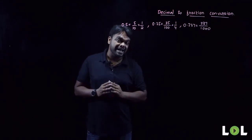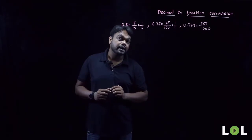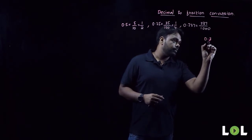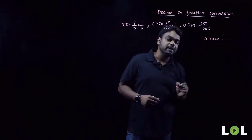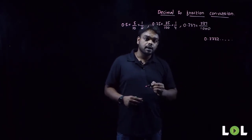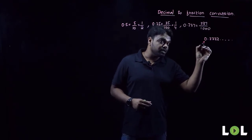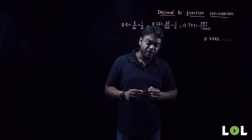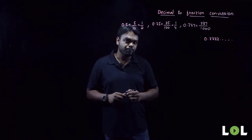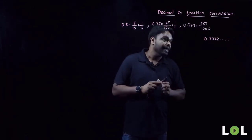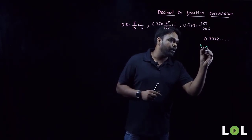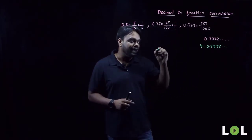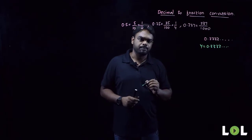The problem actually arises with recurring and non-terminating decimals. Suppose I take a decimal like 0.333333 recurring. The problem is we do not know how many 3s to write in the numerator and how many 0s to put in the denominator. Let us consider this as y = 0.33333. Our problem is the recurring digit, but if we can eliminate that, we can easily convert it into a fraction.